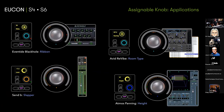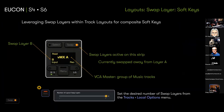Just to throw out more applications: plugin parameters obviously, sends, and here's a slick one — I was playing with Revive and you could step through room types quickly. If you want to get to a spring and roll through springs, you can throw that on the knob and change room types while controlling decays and pre-delays from the faders. Really trying to expose you to different ideas you might want to explore.